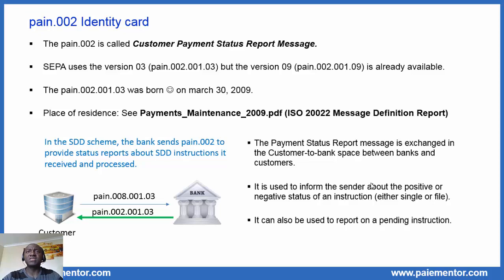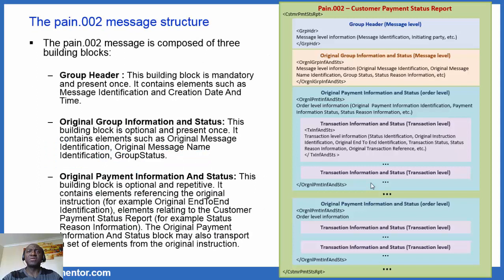How does a PAYING 2 message look like? The customer payment status report message is composed of three building blocks: the group header, the original group information and status, and the original payment information and status block. The group header is mandatory and present once. It contains, among others, the message identification, which allows customer and bank to unambiguously identify a message. The message ID is generated by the bank. The second block is the original group information and status — it is mandatory and present once. It gives information about the original message, the message identification and name, and why the message was rejected.